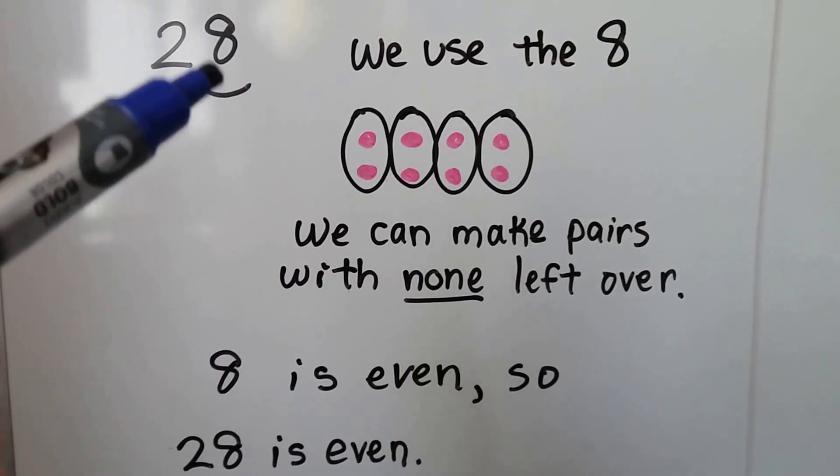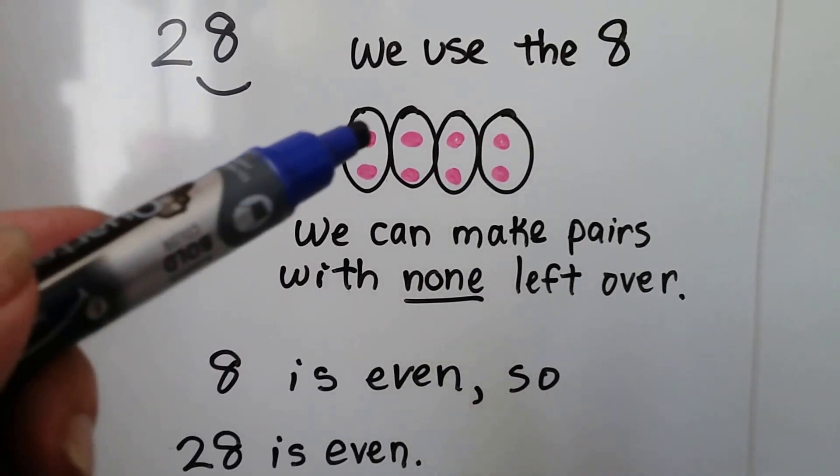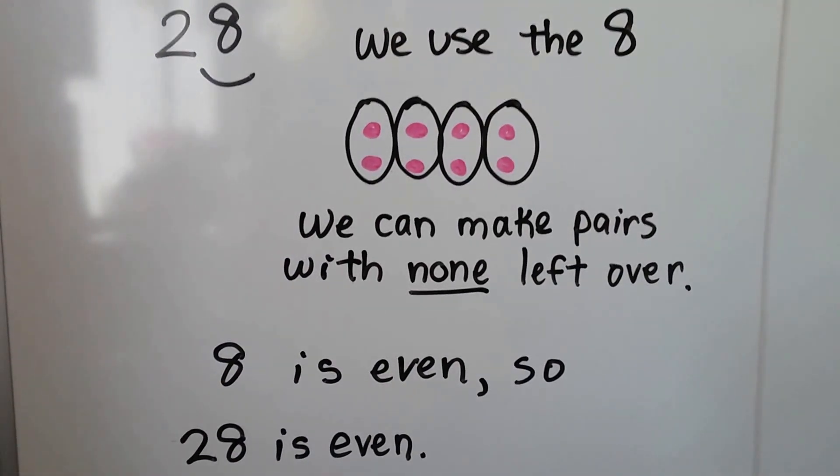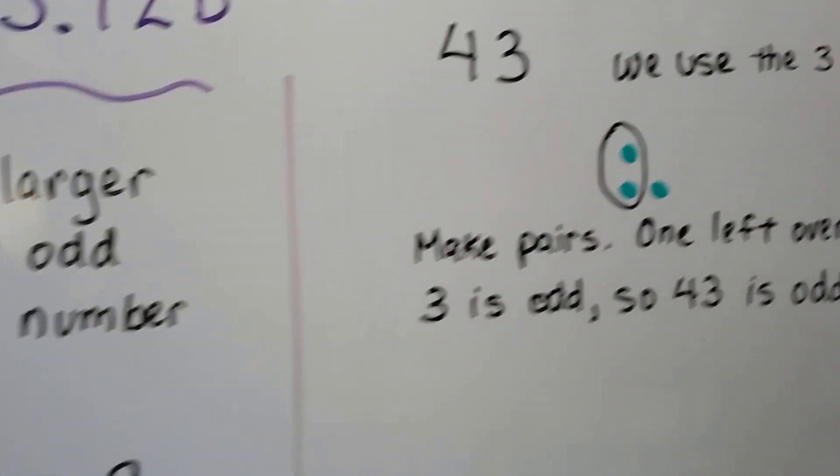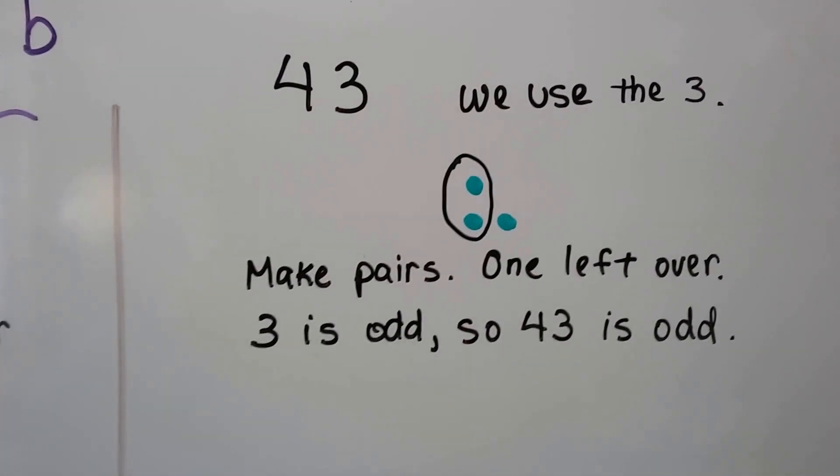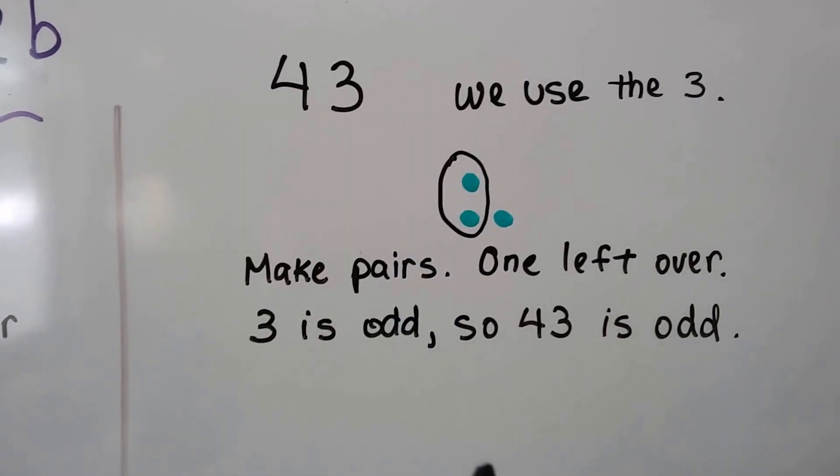We don't have to make 28 dots and then make pairs. We can just use the ones place. Look at the number 43, we use the 3. We make pairs with the 3.